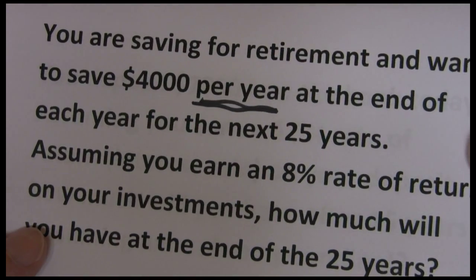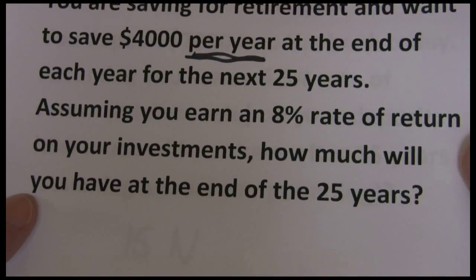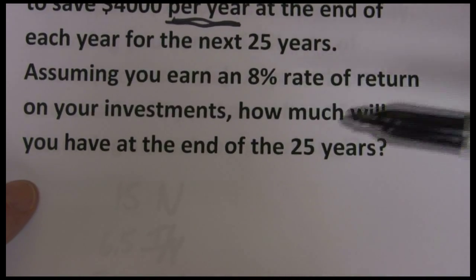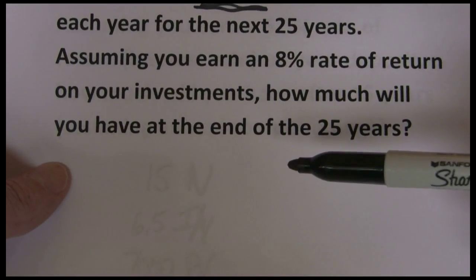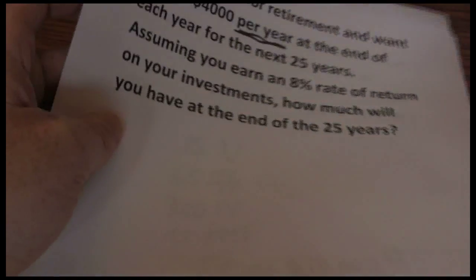So we're going to save $4,000 per year at the end of each year for the next 25 years. We want to earn an 8% rate of return. And how much will we have at the end of the 25 years? So we're solving for a future value.